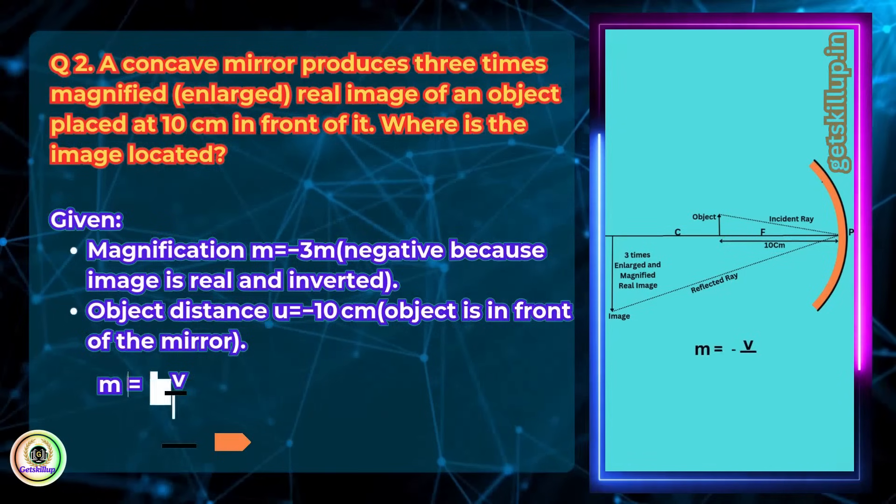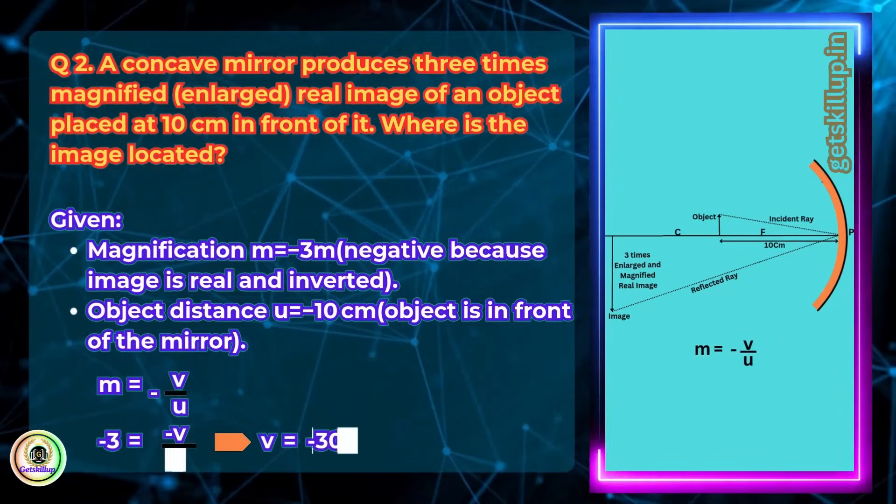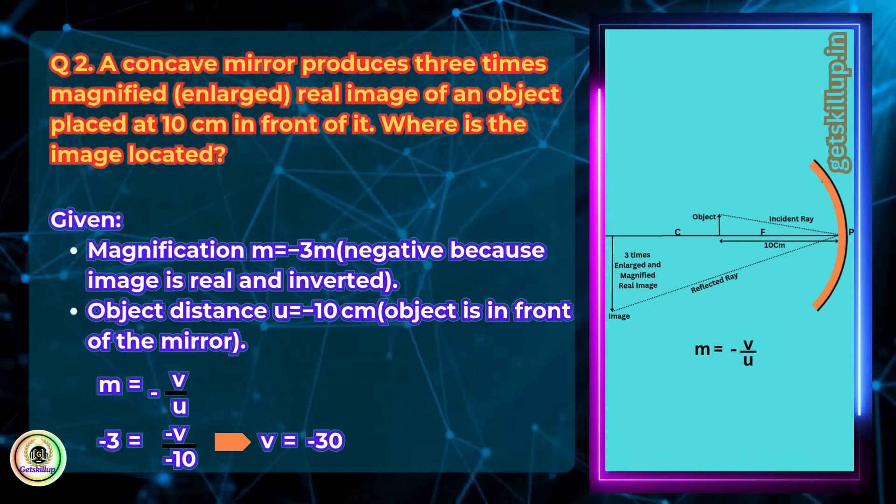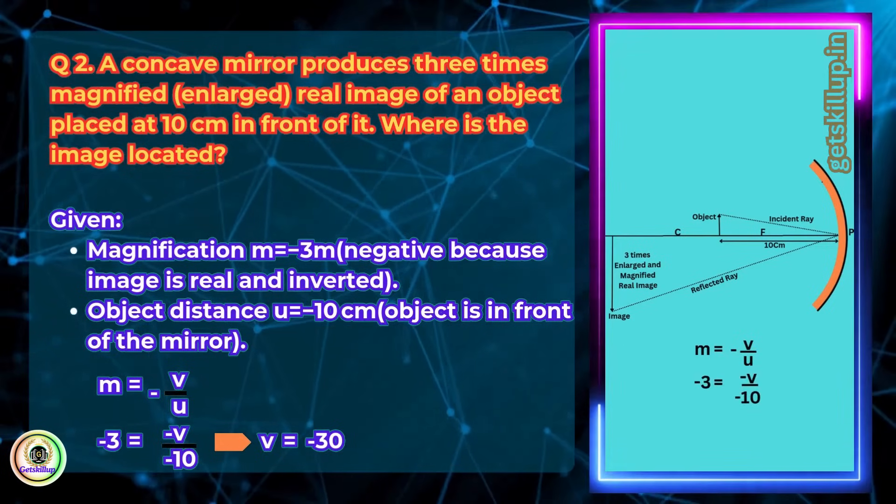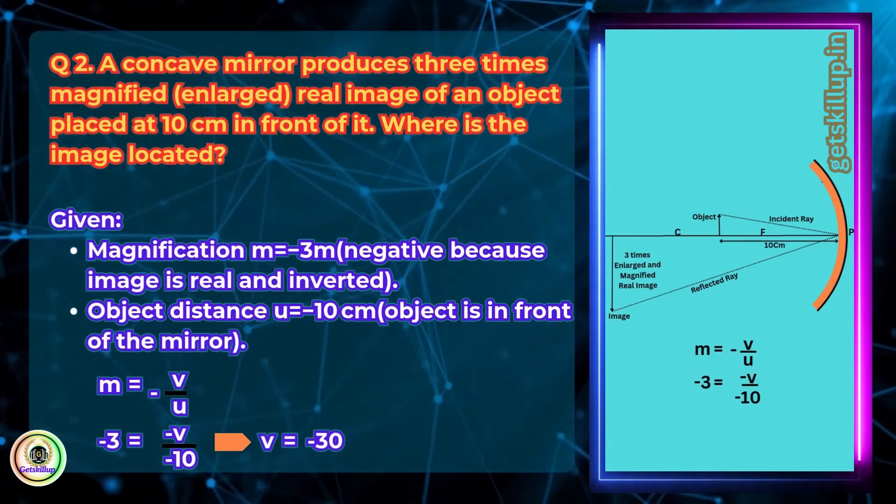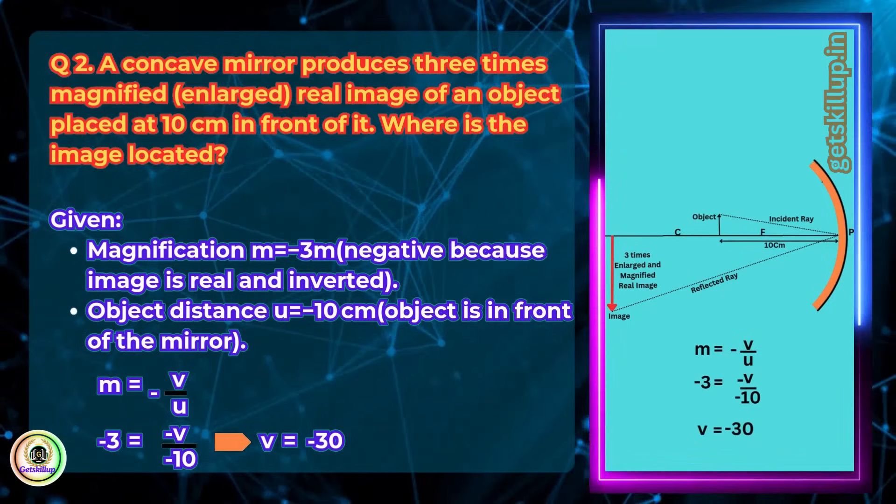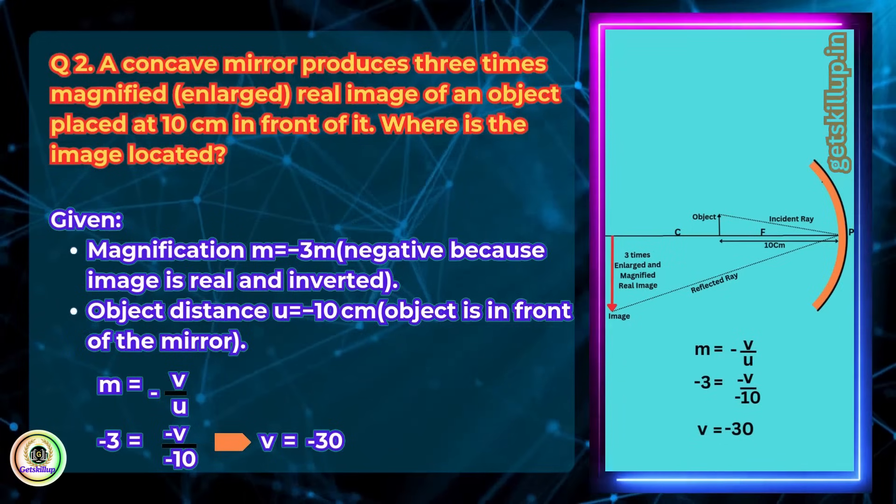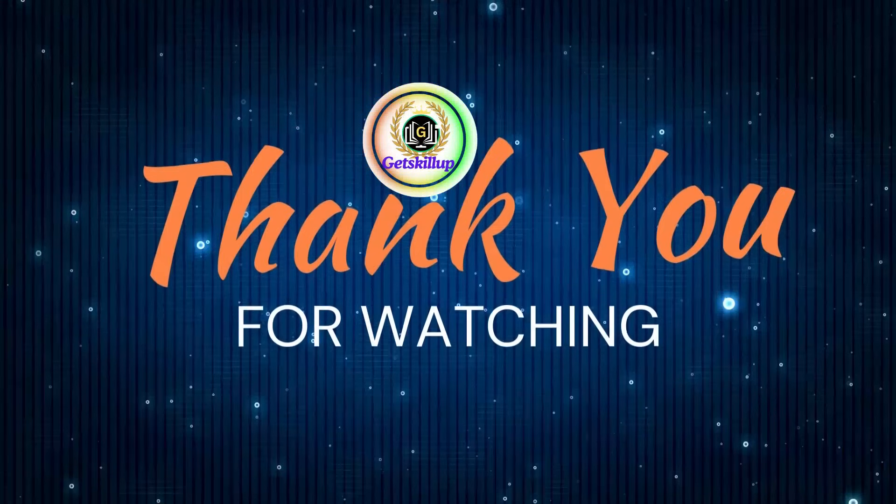From magnification formula for mirrors, m equals minus v by u. Minus 3 equals minus v by minus 10, equals minus 30 cm. So, image is located at 30 cm in front of the mirror. Thank you for watching.